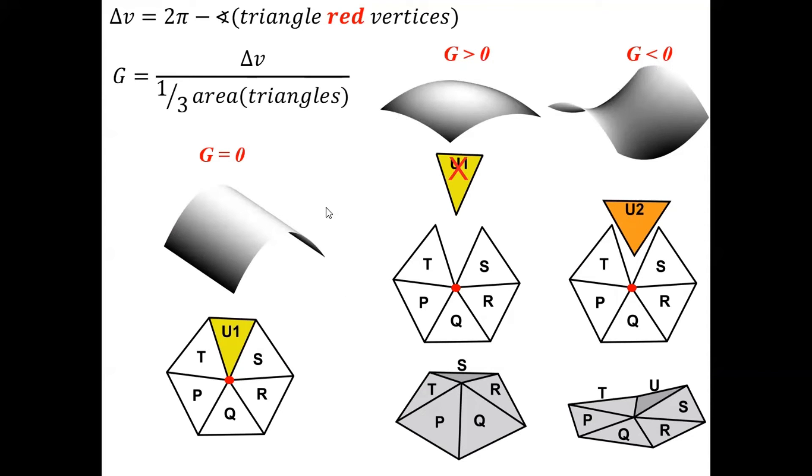It is computed by dividing delta V, which is the difference between two pi and the sum of angles of the triangles that meet at the red vertex, and this is divided by one-third the area of the triangles.